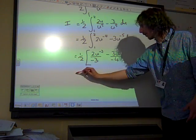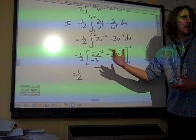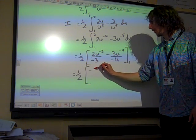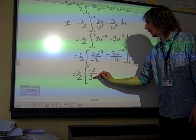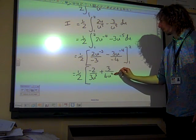I'm still leaving the half in front. I've not forgotten about it. I maybe wouldn't have written this many lines, but just to see what we've got going on here. We've got minus 2 over 3u cubed, haven't we? And this would be plus 3 over 4u to the 4.